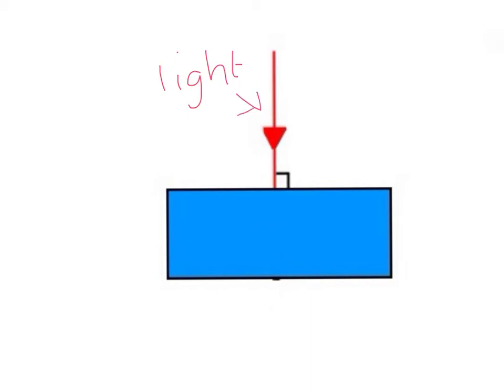Here is a light ray, indicated with a terrible arrow. Here is some glass, the object in blue. If the light enters the glass along an imaginary normal line, it still slows down a bit, but goes straight through.